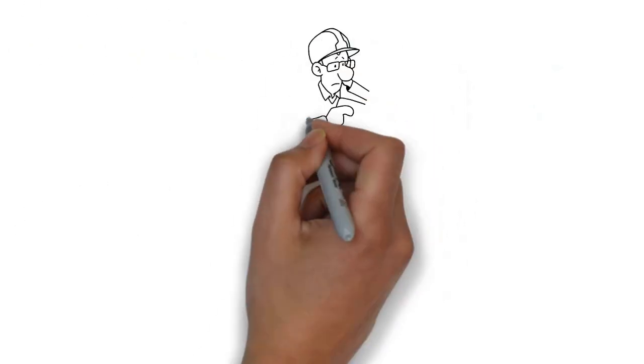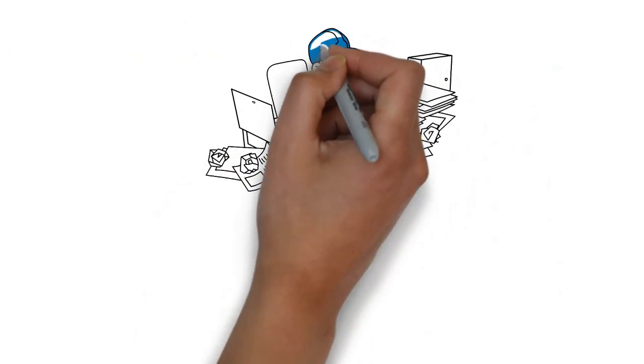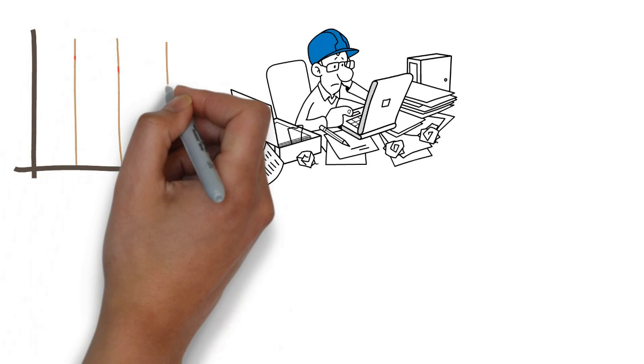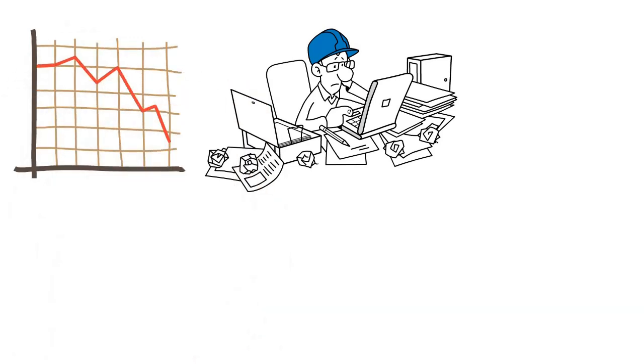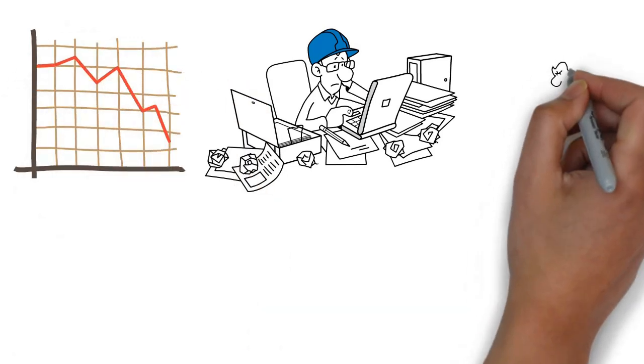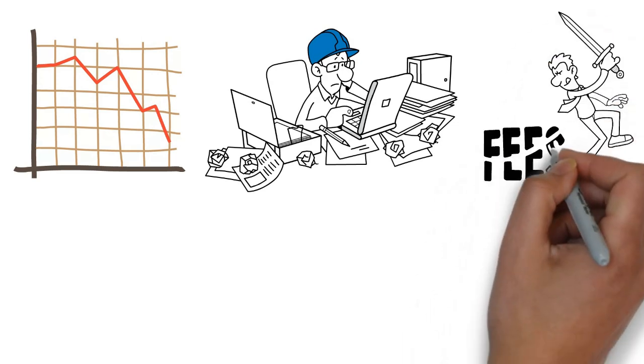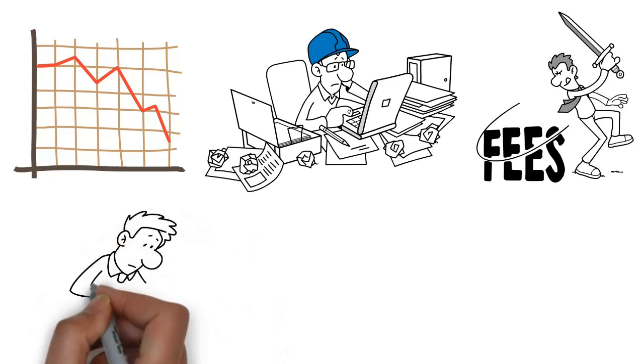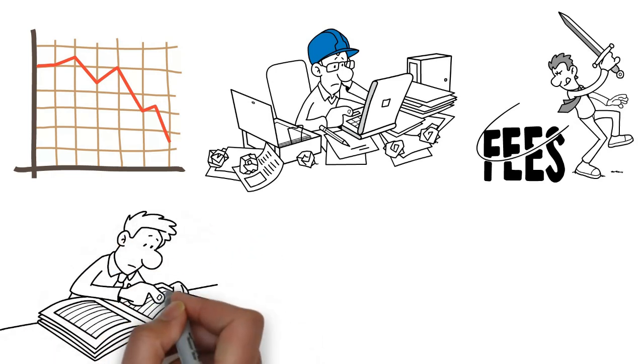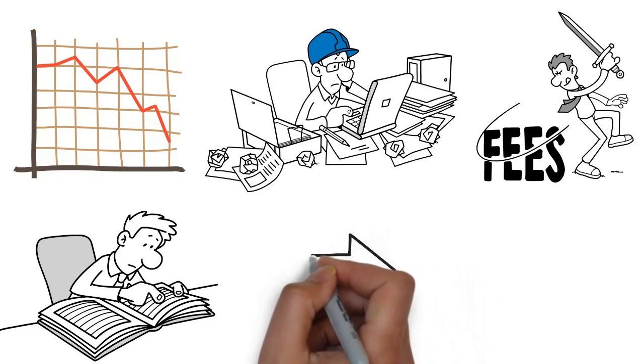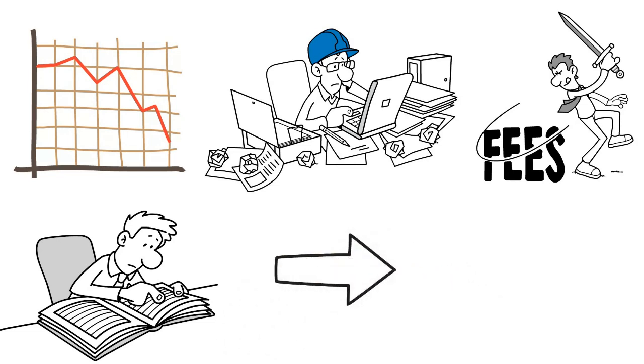For starters, you could take on an additional job or work overtime at your current one. Now this is easier said than done during a depressed market because, as mentioned before, when the economy is in a slide, companies are looking to cut costs, not increase them. It's for this reason that it's advisable that people learn a skill that they could use to make money online.